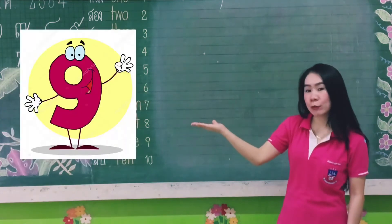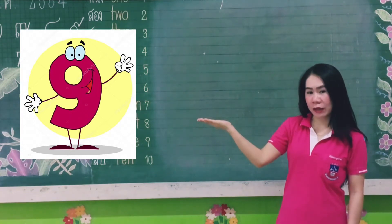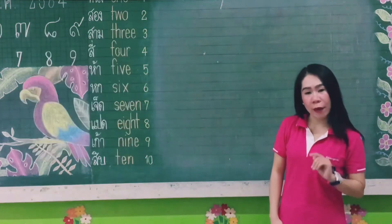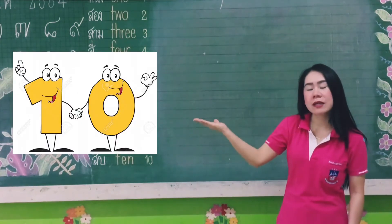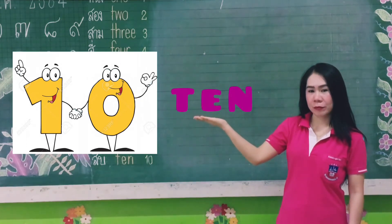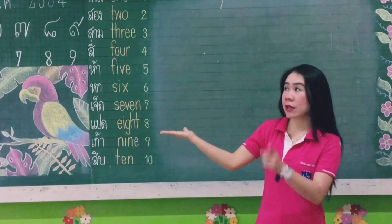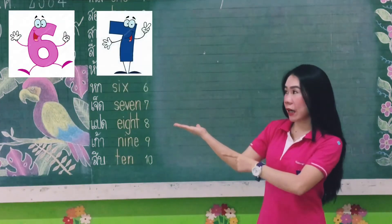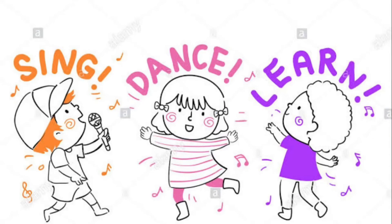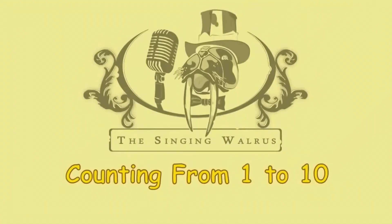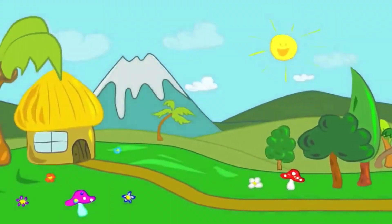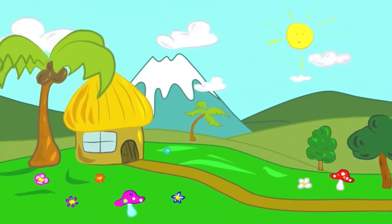This is number 9. Say 9. Let's spell N-I-N-E. 9. And the last number we have is 10. Say 10. Now let's spell T-E-N. 10.